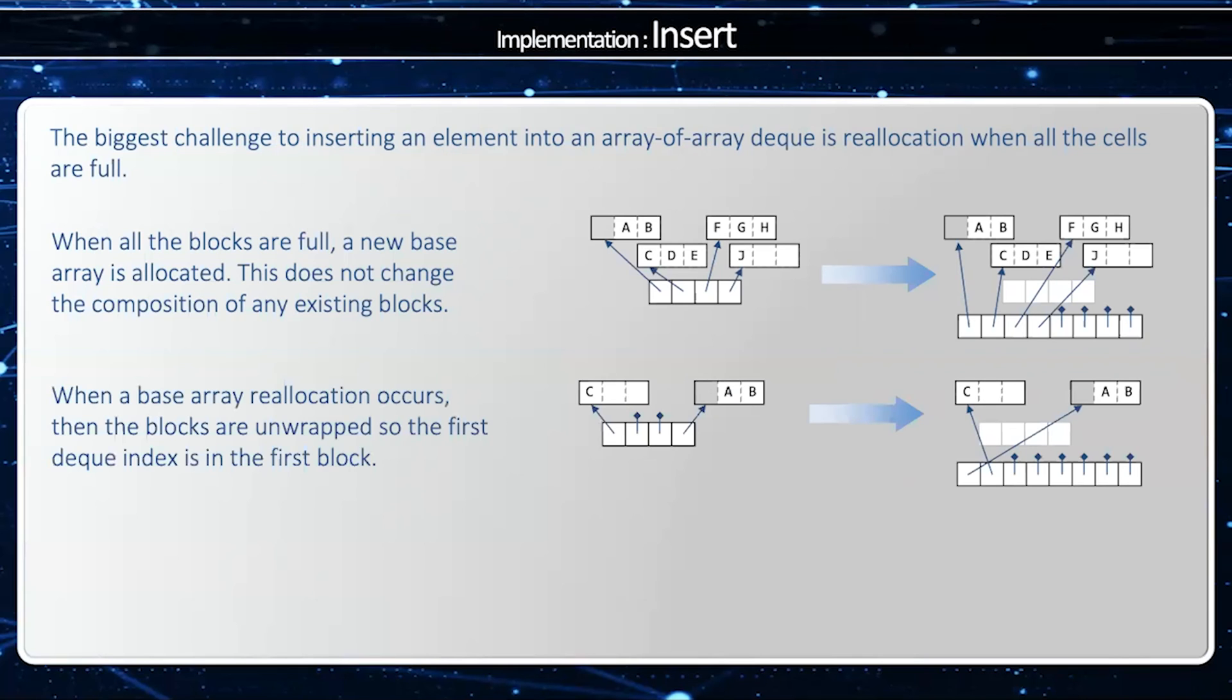Another example, when a base array is reallocated, then I want to unwrap the blocks. And so in this example, deque index 0 is value A, deque index 1 is value B, and deque index 2 is value C.